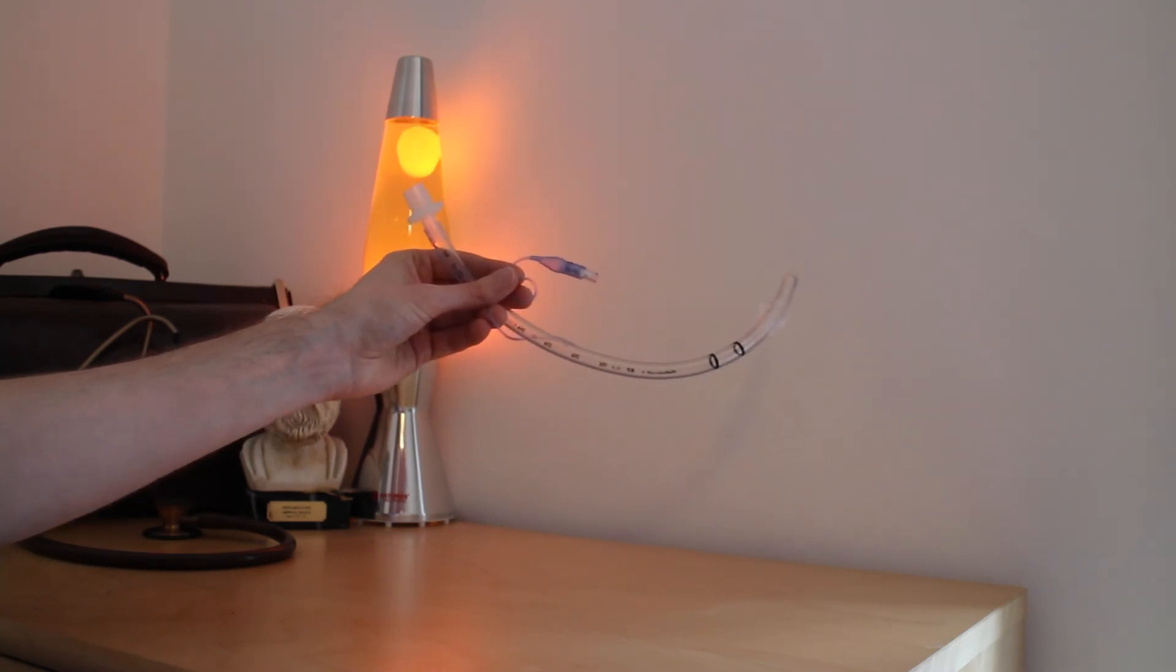This is an ET tube designed to provide a definitive airway, hence the cuff. However, it is possible that a patient may aspirate. This means that the stomach contents is vomited or regurgitated and then it passes into the lungs.